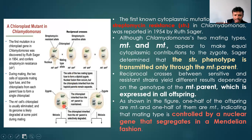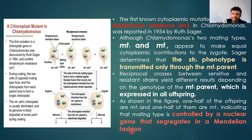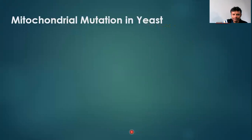The mt+ and mt- offspring indicate that mating type is controlled by a nuclear gene that segregates in Mendelian fashion, where dominance and recessiveness come into effect. So we have learned two types of characters: one influenced by the nucleus and the other by the mitochondria. The poky inheritance is mitochondrial, while streptomycin resistance in this context is nuclear inheritance — two examples to note.